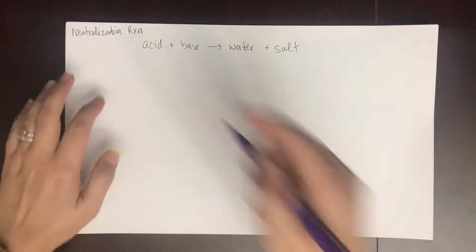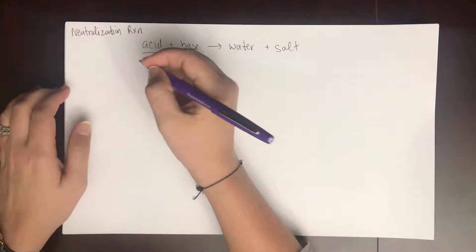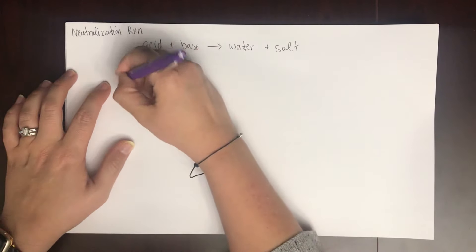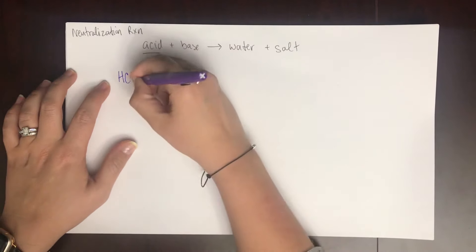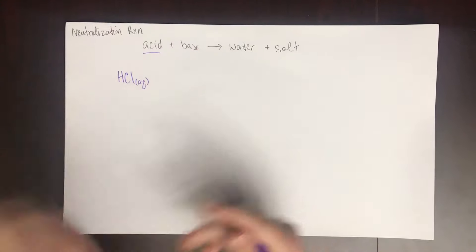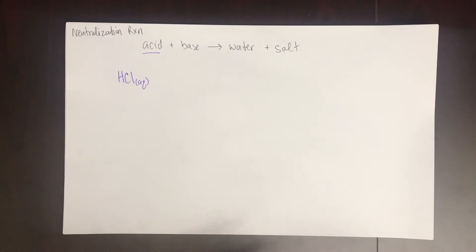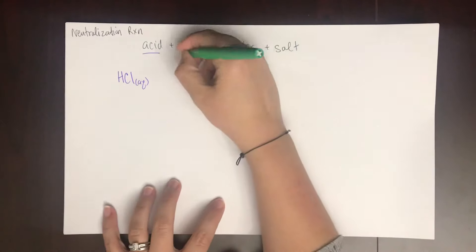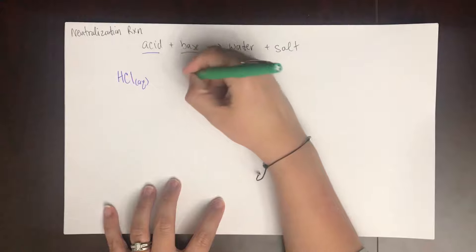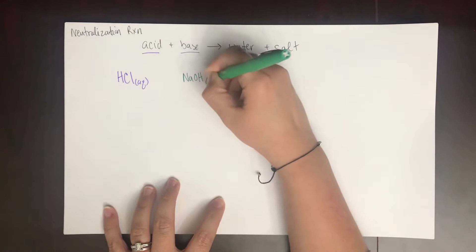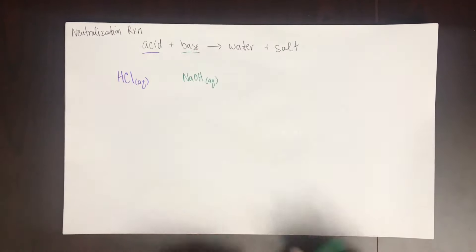So in this case, the acid that we're going to talk about is hydrochloric acid, HCl, which is aqueous. Again, you would look that up on the solubility rules in table 8.4 in your book. The base that we are going to talk about is sodium hydroxide, NaOH, also aqueous.